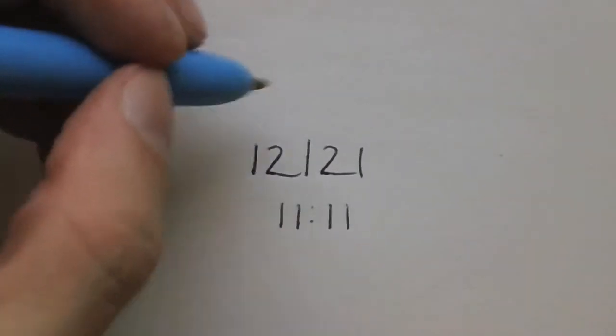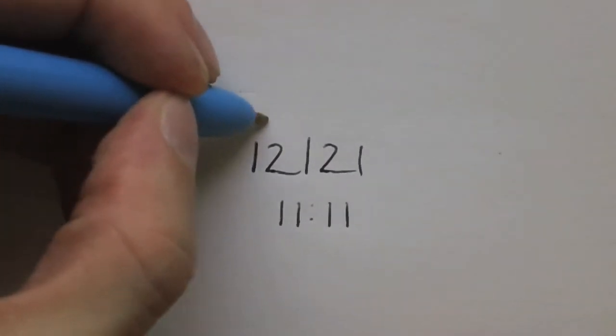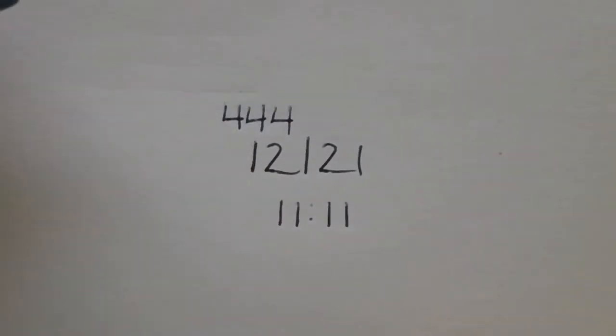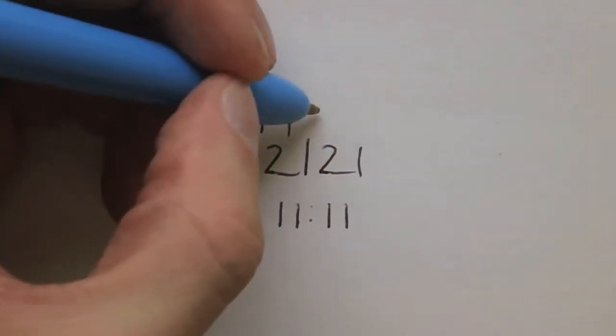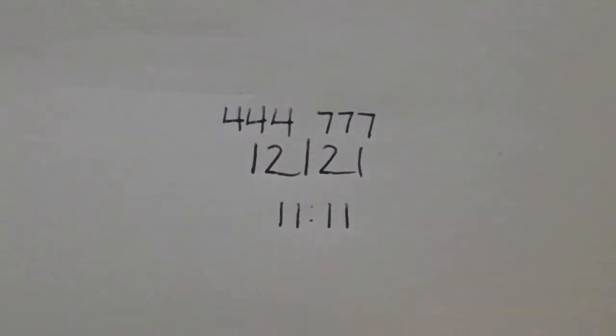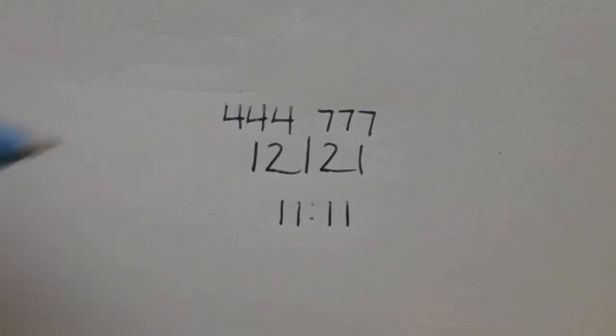So 4 and 7. December 21st, 12 and 21. These are both divisible by 3. 12 is 4, 4, 4. And 21 is 7, 7, 7. So that's cool.